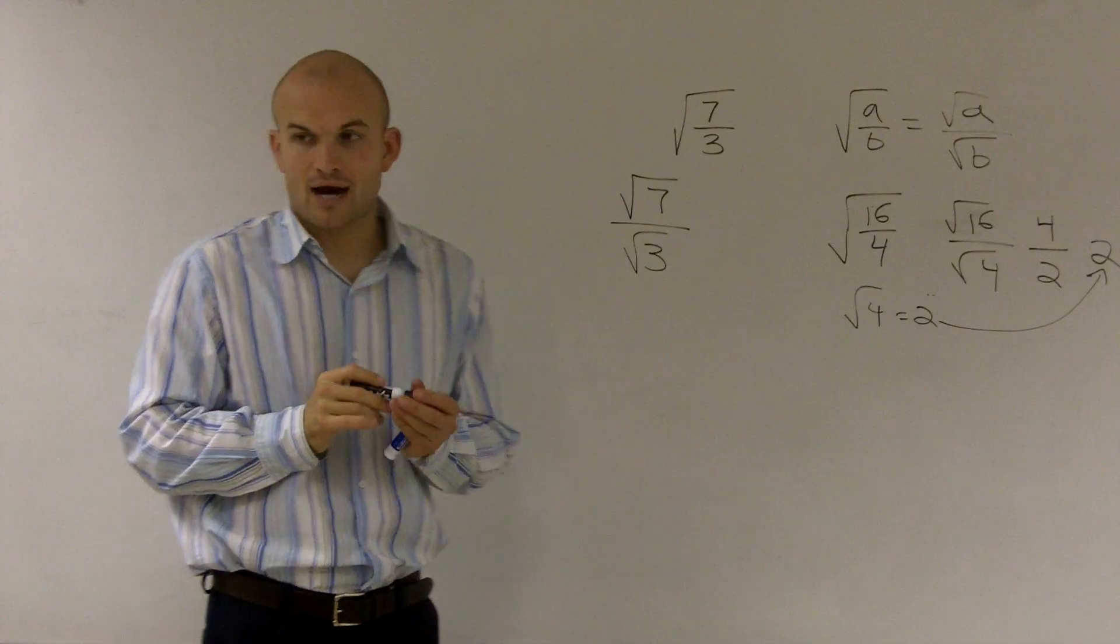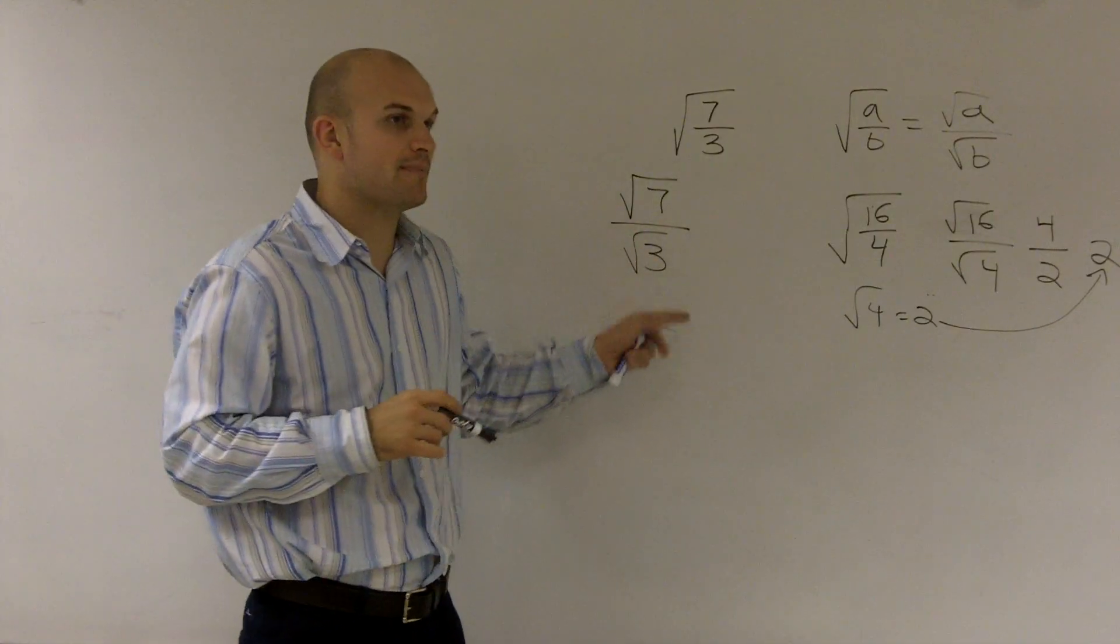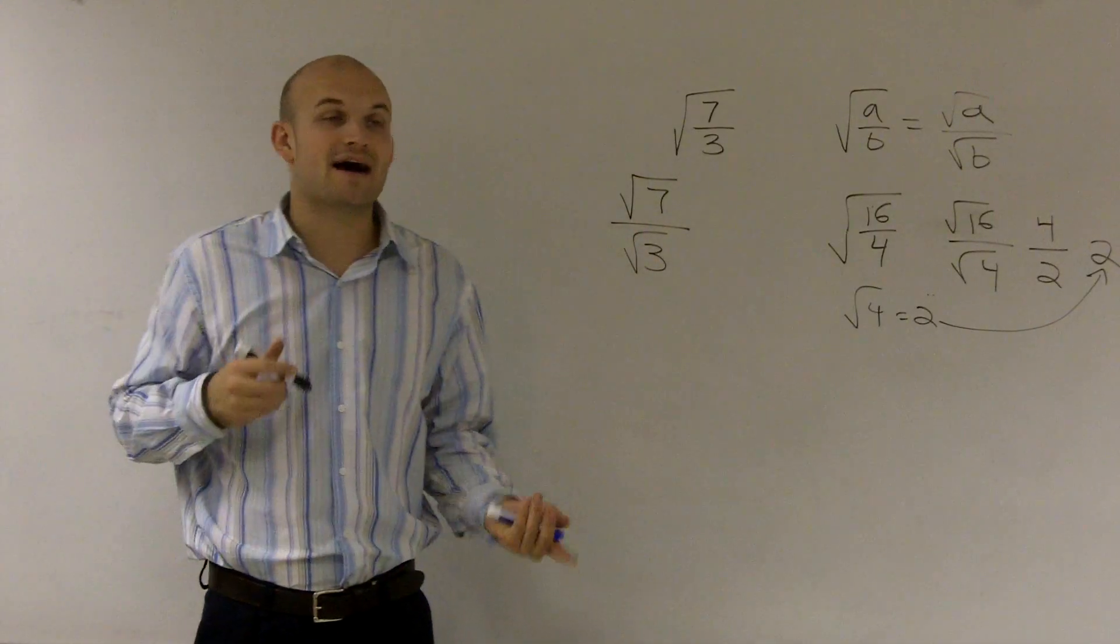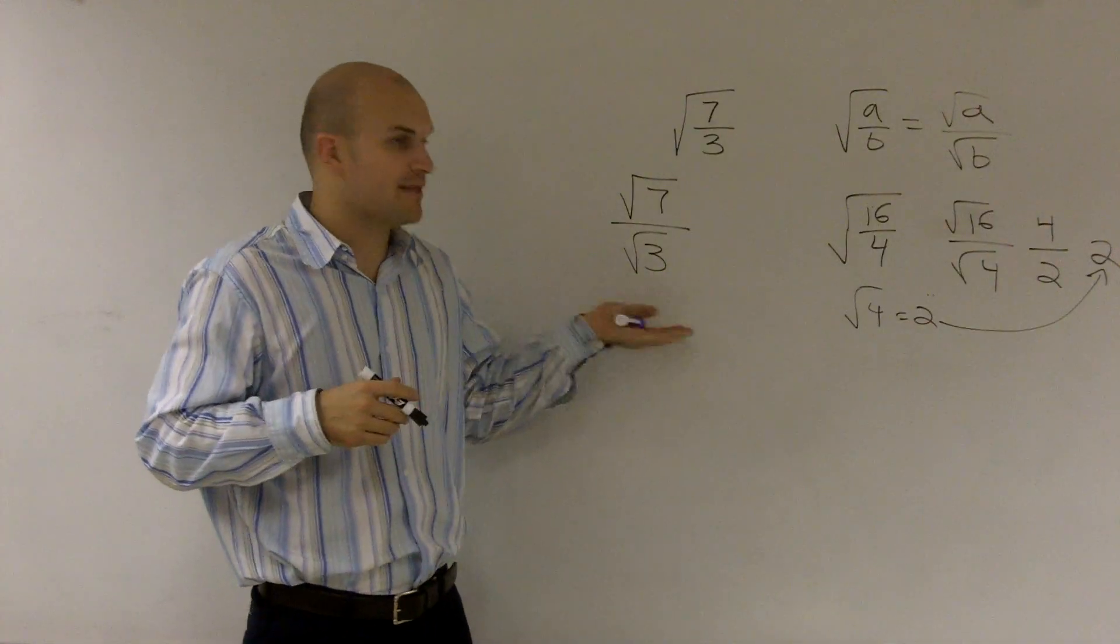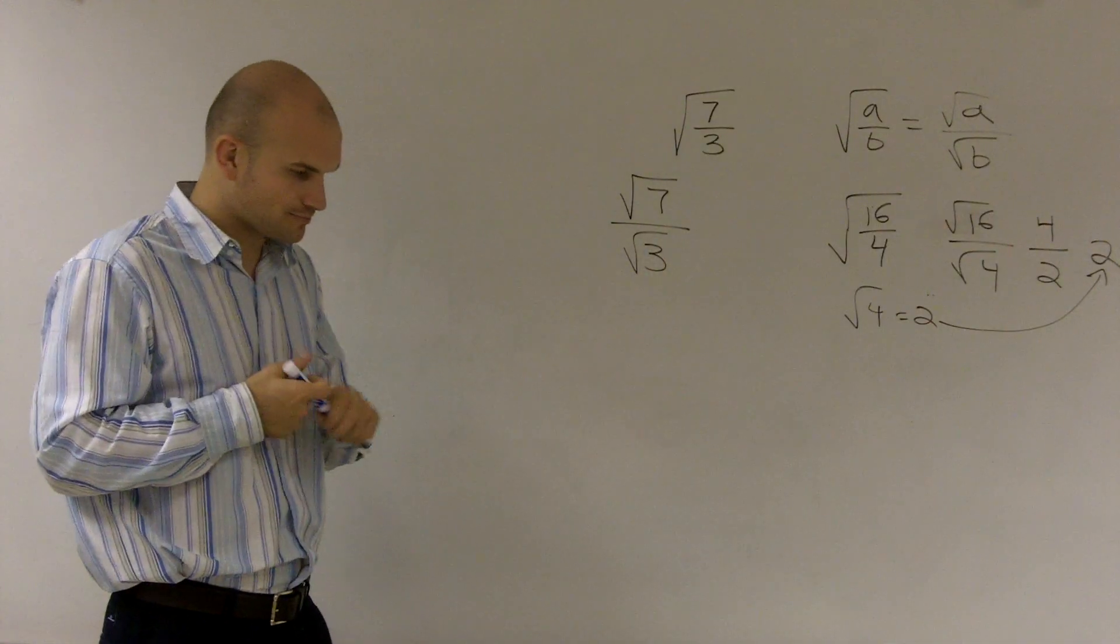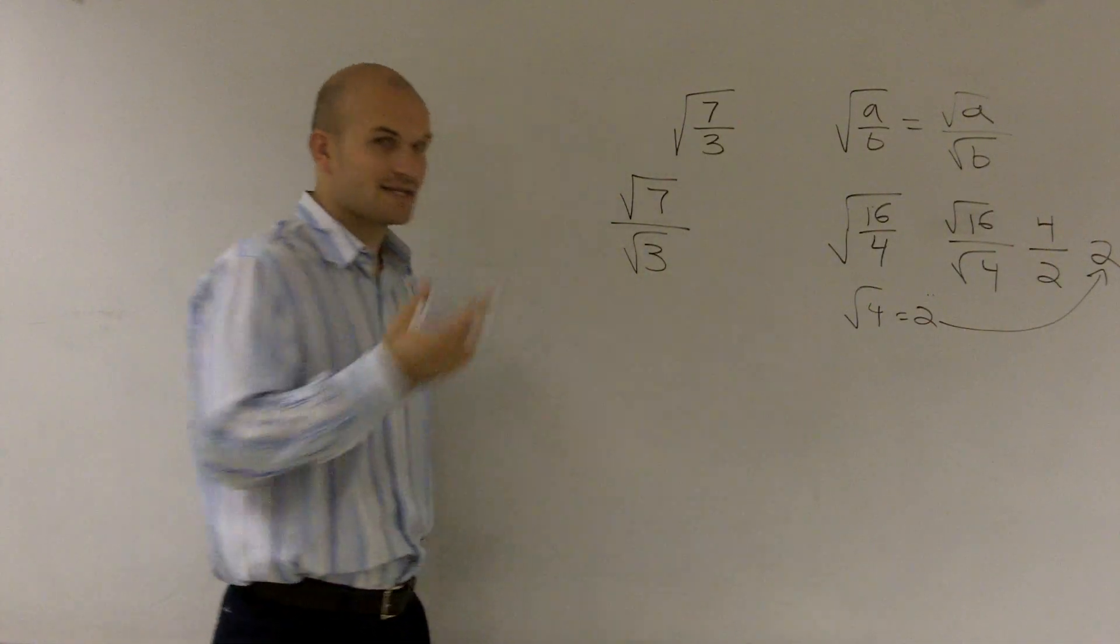And what that reminds me to do now is now that I know that I have the square root on the bottom, remember, you cannot divide by the square root a number on the bottom. So what we're going to have to do is we're going to have to rationalize the denominator.